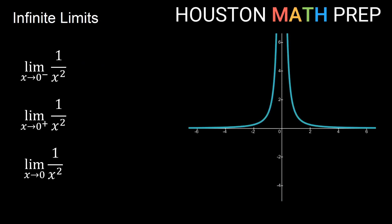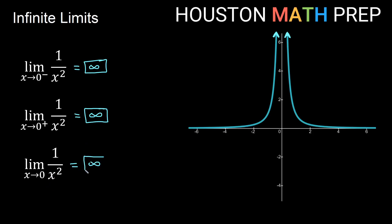Looking at the graph of 1 over x squared, the graph is now in quadrants 1 and 2. As we approach x equals 0 from the negative side, we're on the branch in quadrant 2, and that branch goes positively infinite as we approach the y-axis. When approaching x equals 0 from the positive direction, we're in quadrant 1 on this branch, also going infinitely positive. Since both one-sided limits go to positive infinity, we say the overall graph goes positively infinite from both sides of 0.